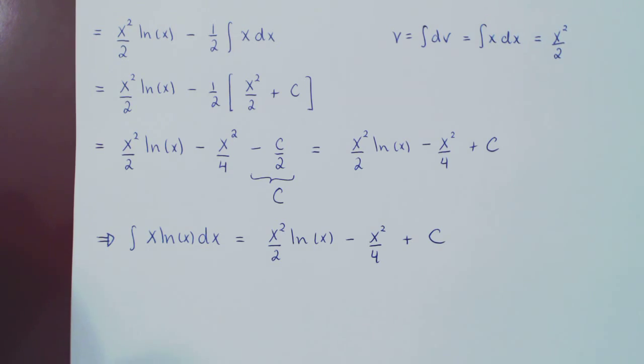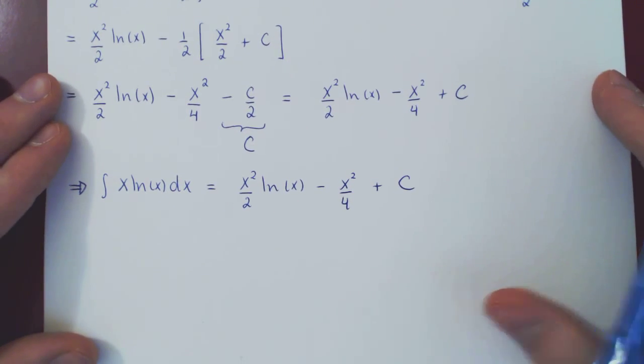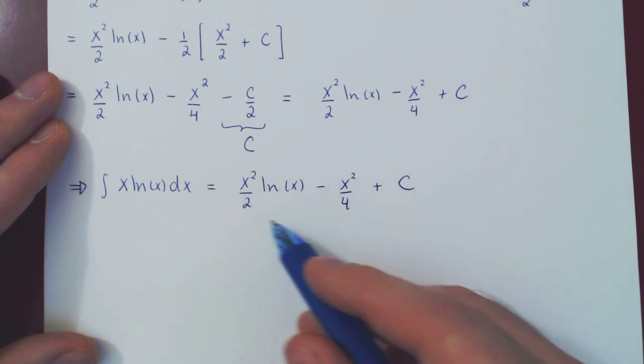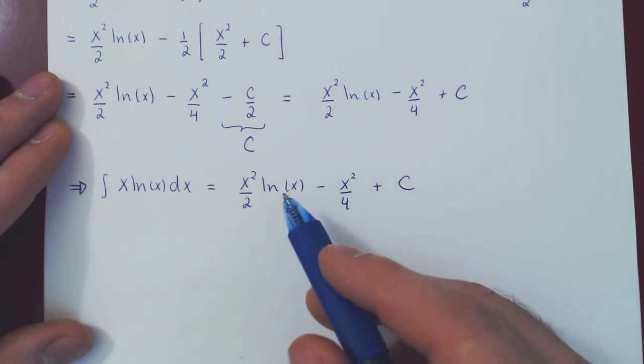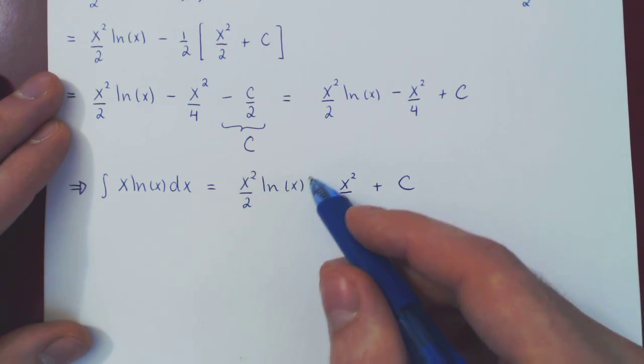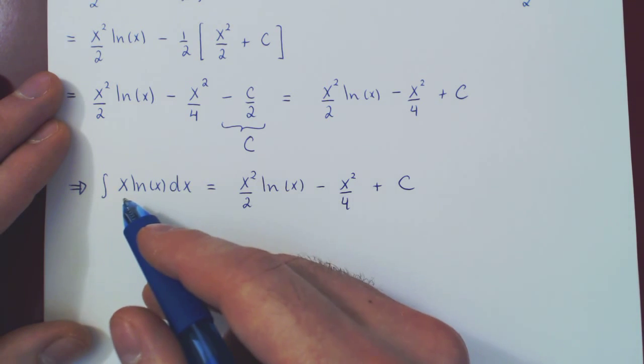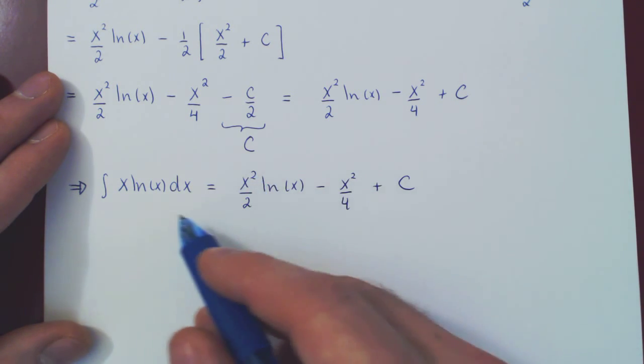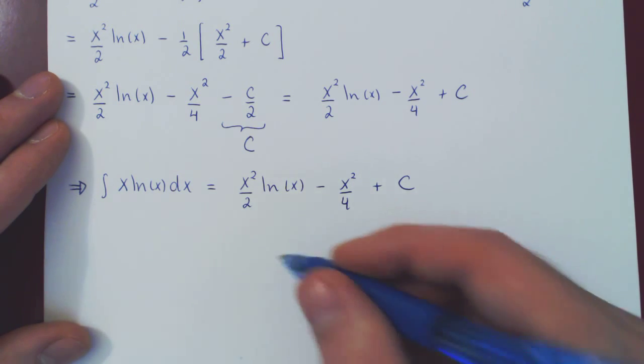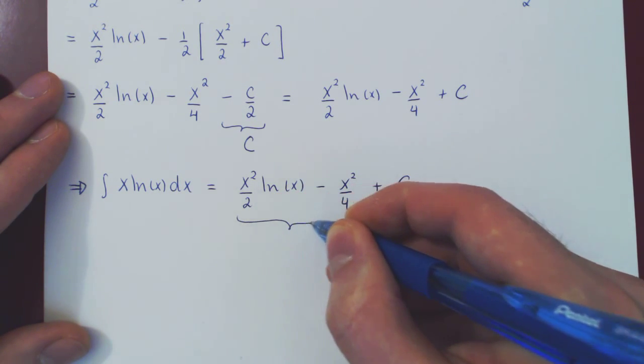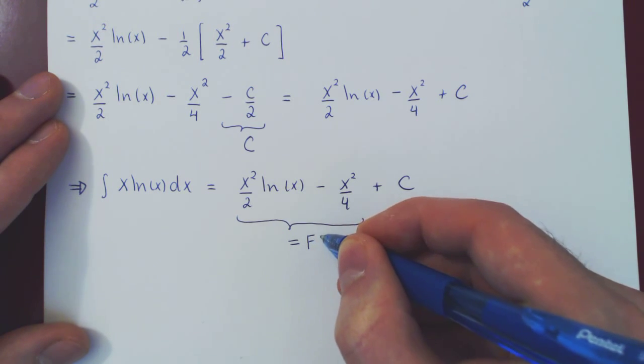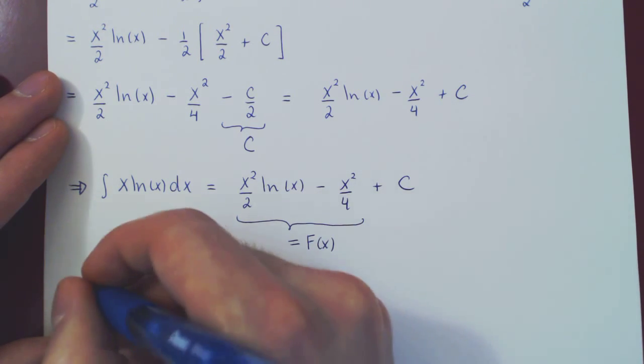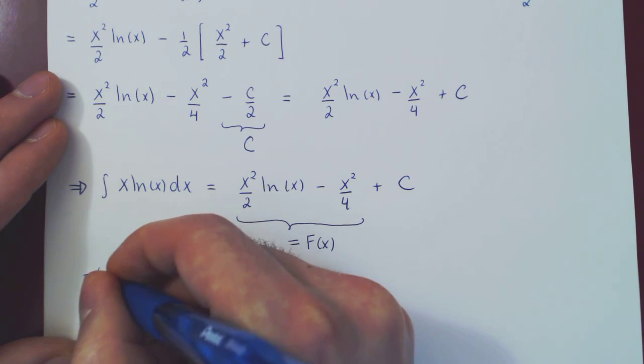One last short comment. As always, we can verify that our answer is the right answer, as we supposedly have found an antiderivative of x ln of x. So if we differentiate our answer, we should get back the original function. Just for fun here, let's do this. This is what we claim is our antiderivative. So let's differentiate it. f prime of x.